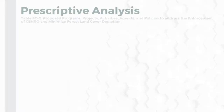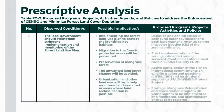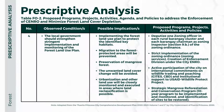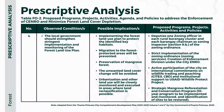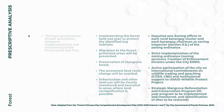The fourth and last observed condition is that the local government should strengthen stringent implementation and monitoring of the forest land use plan, with possible implications including implementing the forest land use plan, migration to forest protected areas, preservation of mangrove forest, and avoidance of unwanted land cover change. Proposed programs include: deputizing one zoning officer in each rural barangay cluster, strict implementation of the zoning ordinance, active participation of the city, and a strategic mangrove reforestation and conservation program.